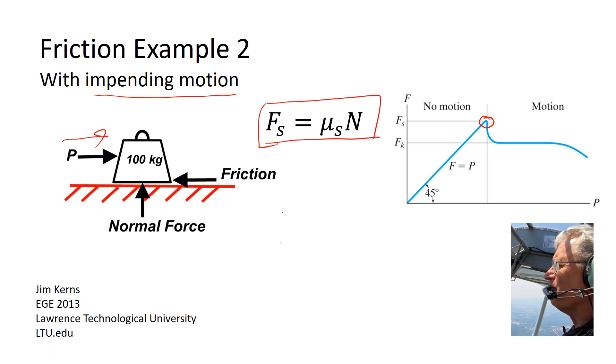And then that, in turn, implies that we can use the equation for the friction based on the static friction and the normal force in our equations of motion. The previous example we did without impending motion. In that example, you just do the normal equations of equilibrium. But in this case, we're going to have the problem worded such that we can use this in our equations directly.